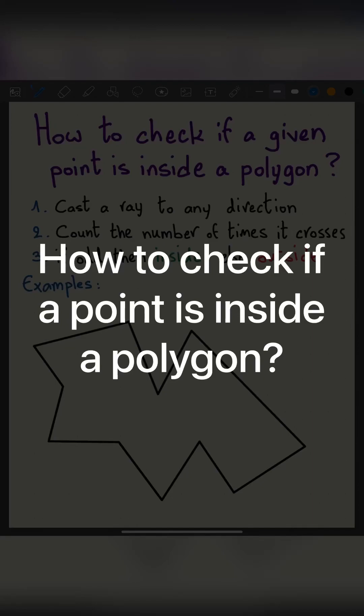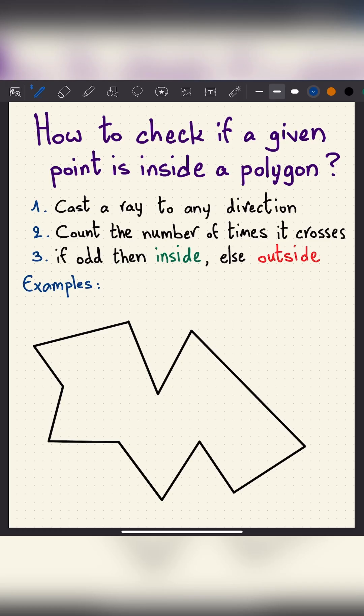How to check if a given point is inside a polygon or outside? Very simple. First, we cast a ray to any direction. Then, we count the number of times it crosses edges of the polygon. If that number is odd, then the point is inside. Else if it's even, it's outside.